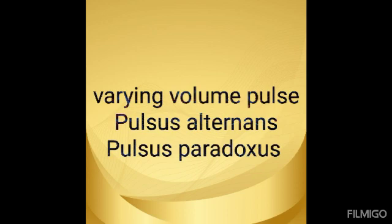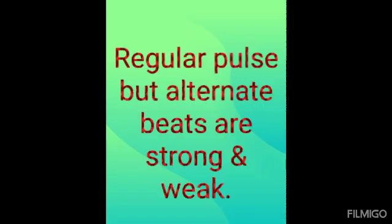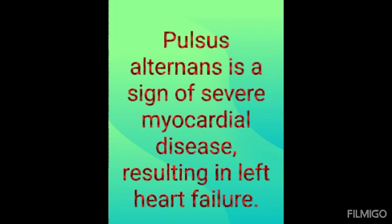Varying volume pulse is either pulsus alternans or pulsus paradoxus. Pulsus alternans is a regular pulse in which alternate beats are strong and weak. It is difficult to appreciate by palpating fingers but is diagnosed while measuring blood pressure: as mercury is lowered, stronger beats are heard first, then weaker beats become audible, suddenly doubling the number of audible beats. Pulsus alternans is a sign of severe myocardial disease resulting in left heart failure.